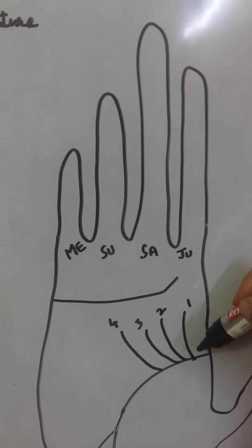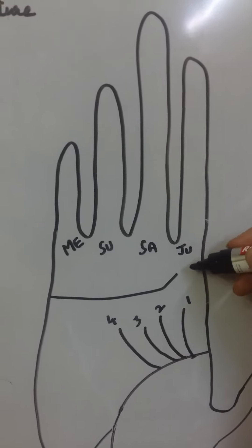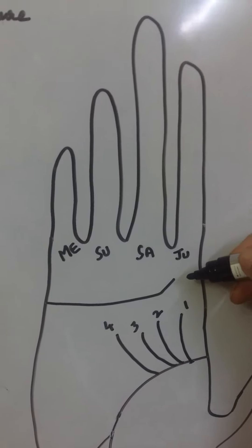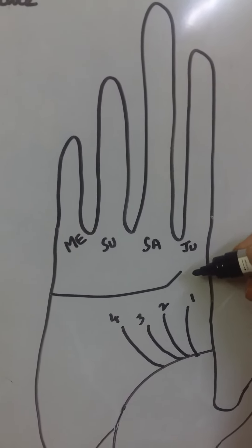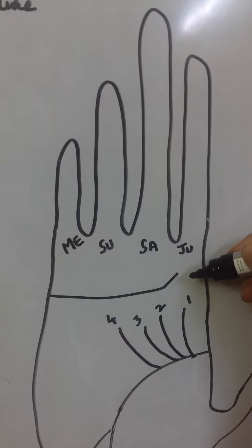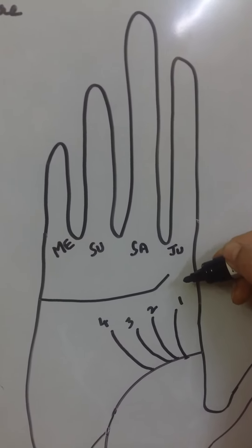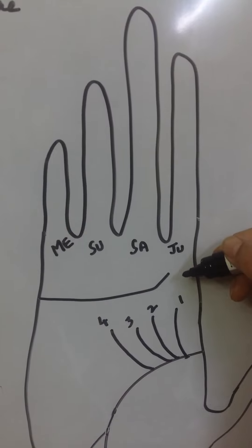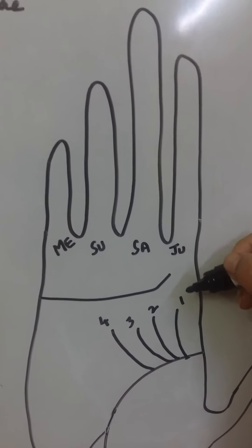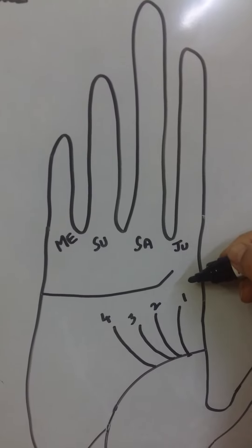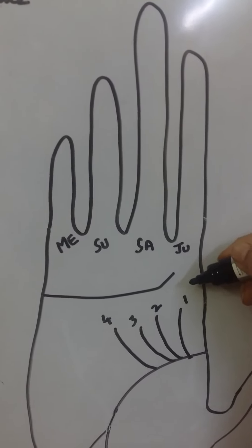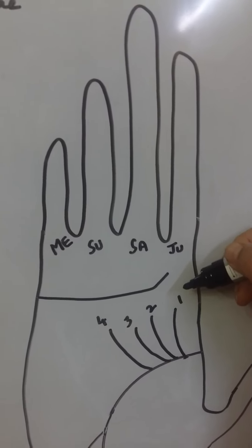First line is, if you see a small branch pointing towards your Jupiter mound, then the person will be a very good educator, will get very good education, and the person will be a kind-hearted person. Such person will be a very good motivator, speaker and leader. And such person get success in their every work. They lead a successful life.